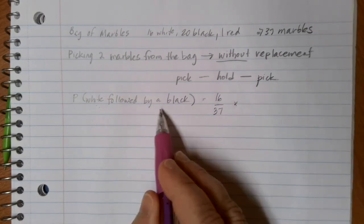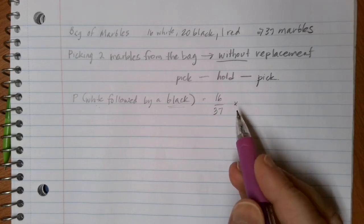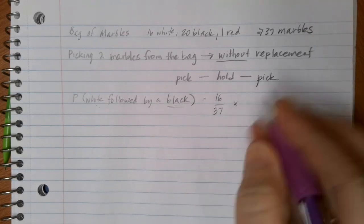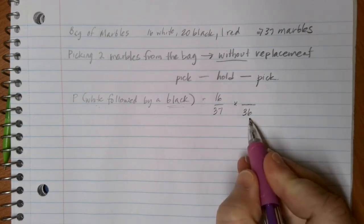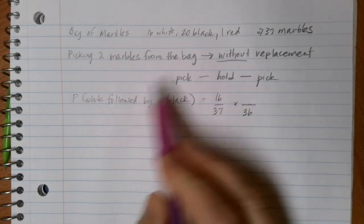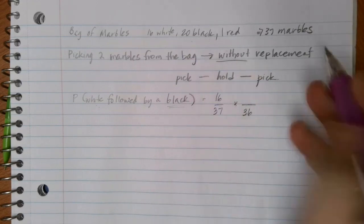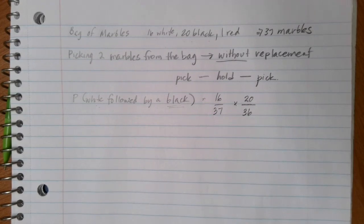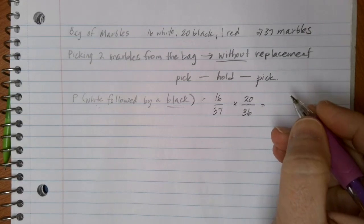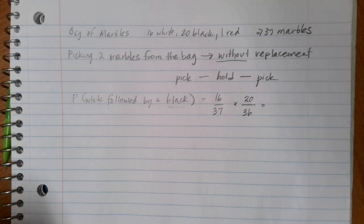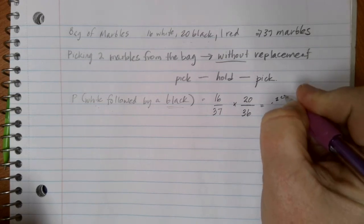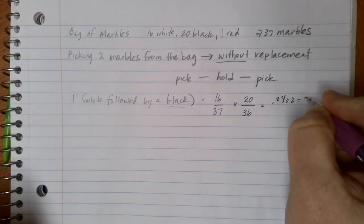I'm going to multiply this by the probability of my second pick, which is the probability of picking a black marble. Now notice that because I'm holding the white marble that I already picked, there are now only 36 marbles in the bag. So I'm going to lower the bottom number of my probability by one. I'm holding a white marble, so that hasn't affected the black marbles — there are still 20 black marbles in the bag. So I do 16 over 37 times 20 over 36, and I get 0.2402, or 24.02 percent.